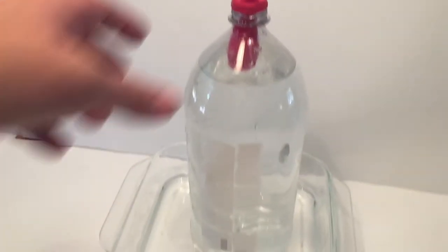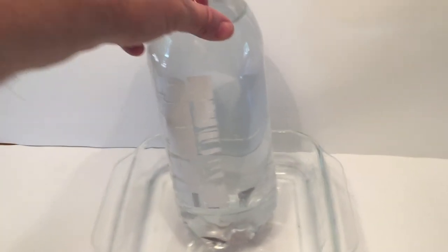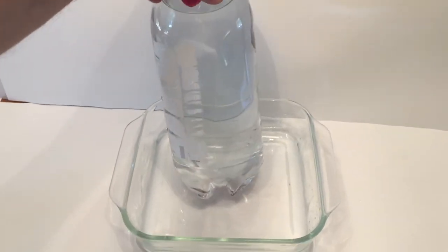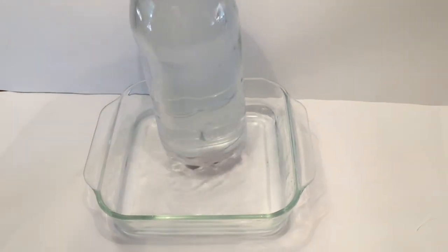When the deflated balloon is placed over the bottle, the air pressure acting on it pushes into the bottle. This is because any water that leaks through the hole creates a vacuum in the space above the water. Air can then enter the space that the water formerly occupied.